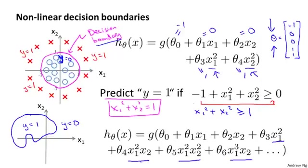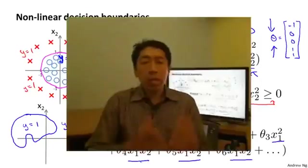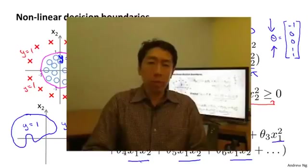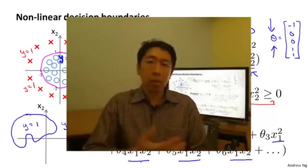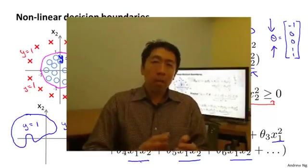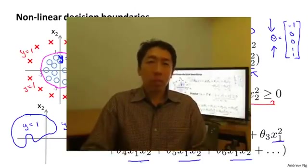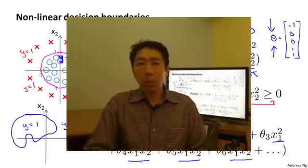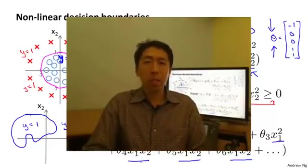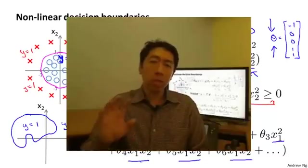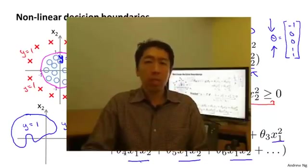With these visualizations, I hope that gives you a sense of the range of hypothesis functions we can represent using logistic regression. Now that we know what h can represent, what I'd like to do next in the following video is talk about how to automatically choose the parameters theta, so that given a training set, we can automatically fit the parameters to our data.